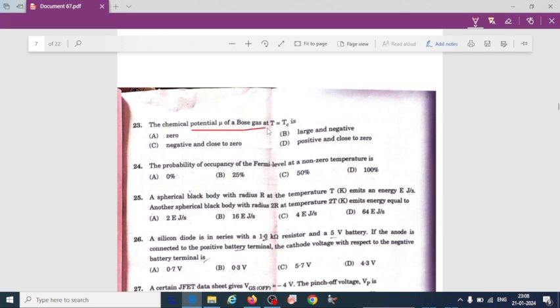The chemical potential mu of Bose gas at temperature equal to critical temperature or transition temperature is zero. So I think option C is correct here. The probability of occupancy of Fermi level at non-zero temperature - the Fermi energy doesn't change with temperature, so at Fermi level the occupancy is going to be 1 by 2 or 0.5, that means 50 percent.